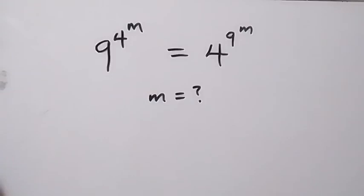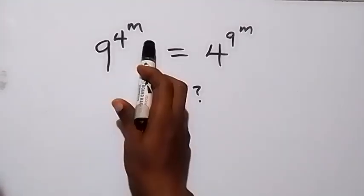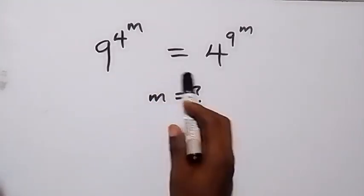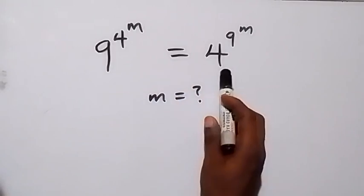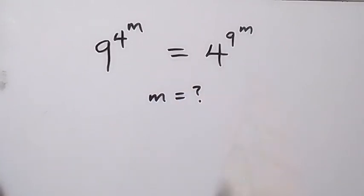Hello, you are welcome. How to solve this nice exponential equation. From here we have 9 raised to power 4 raised to power n, equals to 4 raised to power 9 raised to power n.